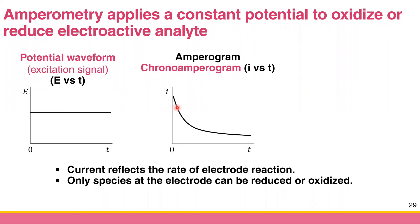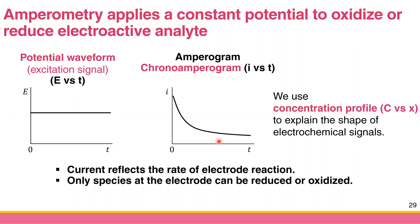The magnitude of the current reflects the rate of the electrode reaction: higher current means higher rate, lower current means lower rate. The current falls because only species at the electrode surface can be reduced or oxidized. Species far from the electrode cannot sense the potential, so no reaction occurs. We use a concentration profile — a graph of concentration versus X, the distance from the electrode surface — to visualize this process.